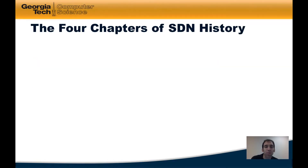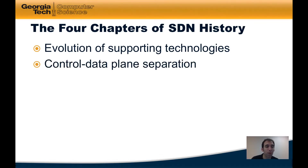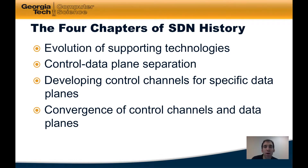There are four chapters in SDN history that we'll discuss throughout this module. The first is the evolution of supporting technologies. In particular, we'll talk about how programmable data planes and controlled data plane separation took shape. We'll speak about the controlled data plane separation in detail as well as its history. We'll also talk about how different specific control channels for certain data planes evolved, and how after the proliferation of these different control channels and data planes, there's been some convergence. In particular, the emerging OpenFlow standard is an example of convergence of a controlled data plane around a specific standard.